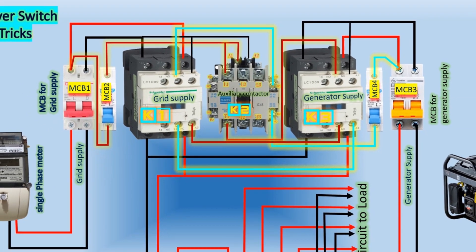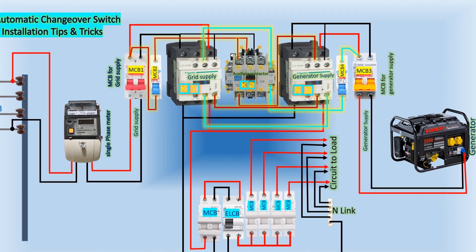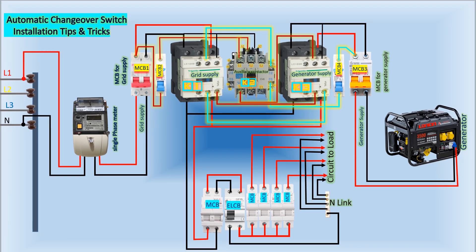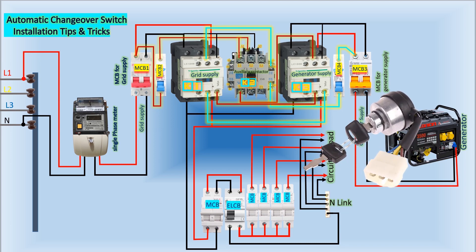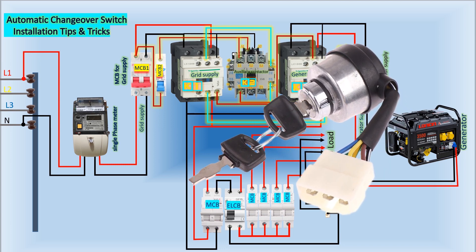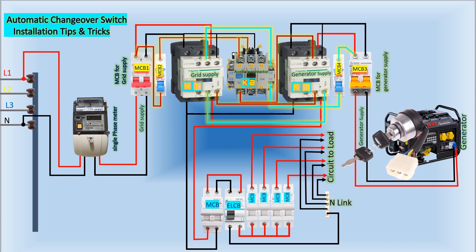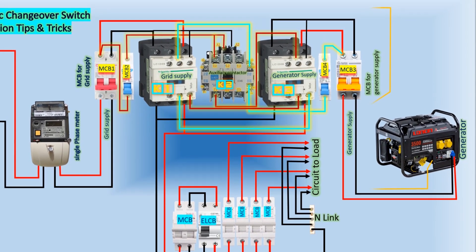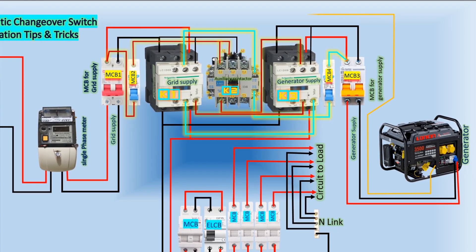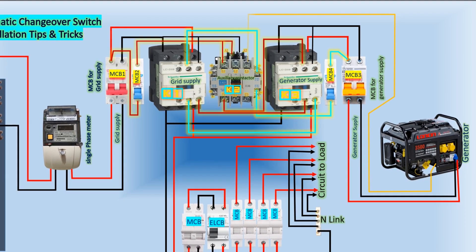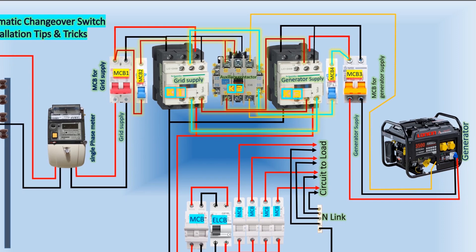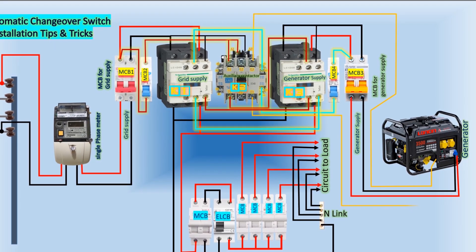If you want the generator to stop automatically, you need to locate the ignition wire — the switch wire that, when touched with the generator body, causes the generator to stop. Typically, the ignition wire is either black or blue in color. To achieve automatic shutdown, locate this wire and connect another wire to it — in this case, we will use an orange wire. This wire is connected to the L3 terminal of contactor K2. From the T3 terminal of contactor K2, a wire is connected to the generator and linked with the generator body.